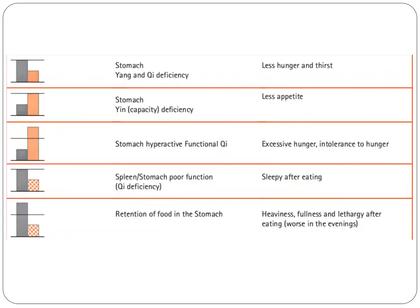We have here the first tower diagram. Deficient stomach yang, or stomach yang chi deficiency, results in less hunger and thirst. Next, there is a stomach yin deficiency, so there is less appetite. Next, there is a hyperactive functional stomach qi, causing excessive hunger and intolerance to hunger.